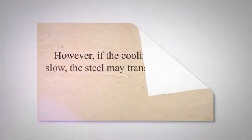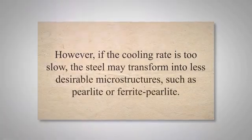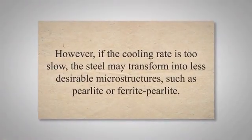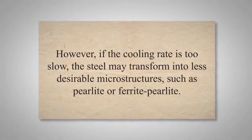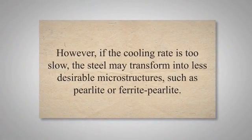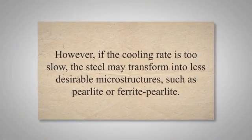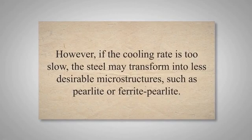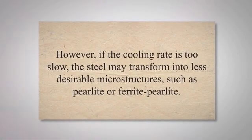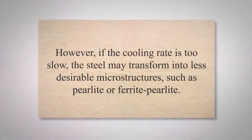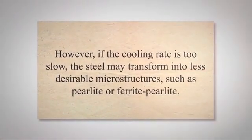The cooling rate also plays a critical role in the formation of acicular ferrite. Rapid cooling rates promote the formation of other microstructures, such as martensite and bainite. However, if the cooling rate is too slow, the steel may transform into less desirable microstructures, such as pearlite or ferrite-pearlite.